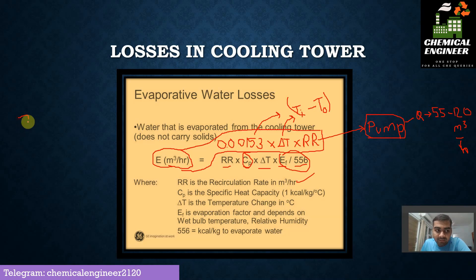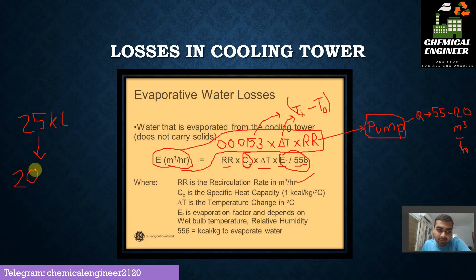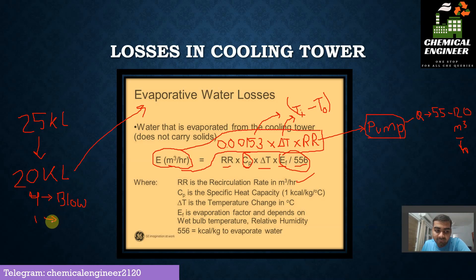For example, suppose 25 kiloliters of water are added to your cooling tower in one day. Of that total, around 20 kiloliters will be lost through evaporative losses, about 4 kiloliters through blowdown based on water quality (which we will see in the next video), and around 1 kiloliter from other losses. That is all about evaporative water loss calculation. If you have any doubts, please comment below or ask in the Telegram group. Thank you for watching.